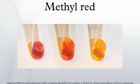An isolate is inoculated into a tube with a sterile transfer loop. The tube is incubated at 35 degrees Celsius for 2 to 5 days. After incubation, 2.5 milliliters of the medium are transferred to another tube. Five drops of the pH indicator methyl red are added, and the tube is gently rolled between the palms to disperse the methyl red.